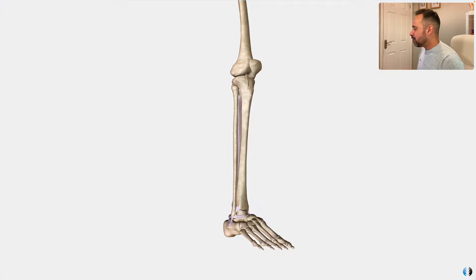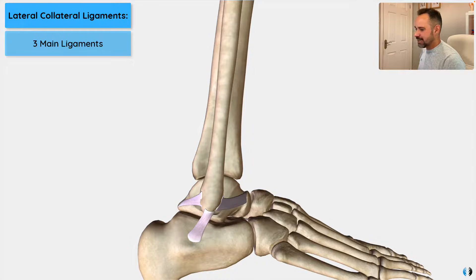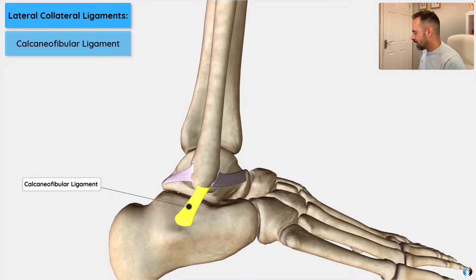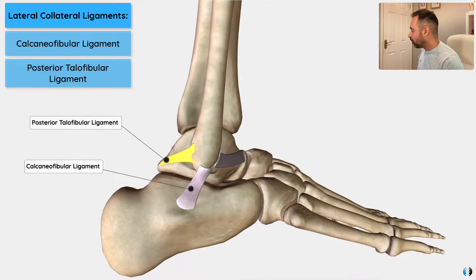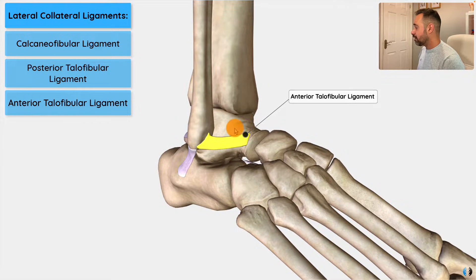Starting with the lateral side of the ankle, there are three main ligaments in this area, and they all attach from various bones to the lateral malleolus — the bony prominence that is the distal fibula on the lateral side of the ankle joint. The first is the calcaneofibular ligament, running from the calcaneus to the lateral malleolus. We then have the posterior talofibular ligament, which runs from the posterior talus to the lateral malleolus of the fibula. And finally, we have the anterior talofibular ligament, running from the anterior talus to the lateral malleolus of the fibula.